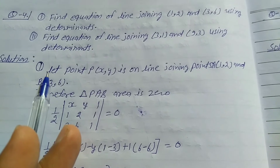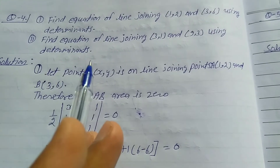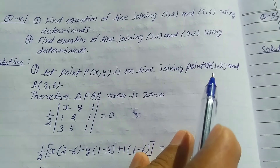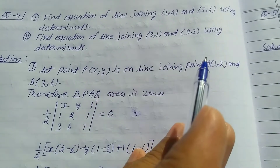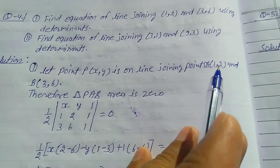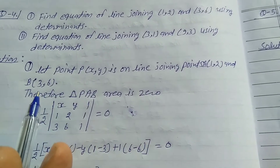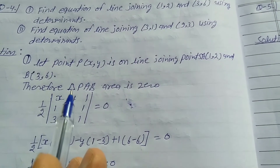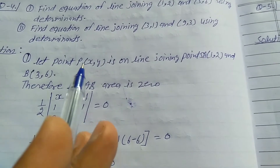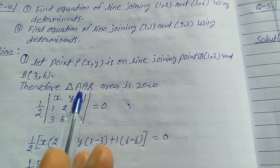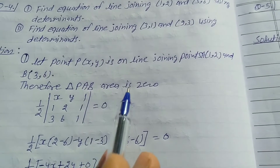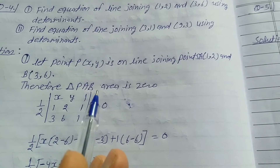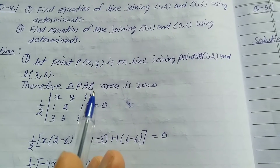Let point P be on the line joining the points A and B. Take first: A bracket (1,2) and B bracket (3,6). Therefore, triangle PAB area is 0, because these 3 points are on one line, so area is 0.